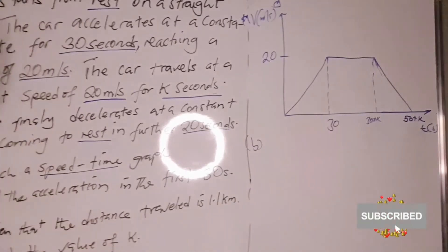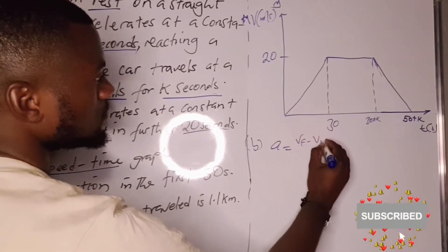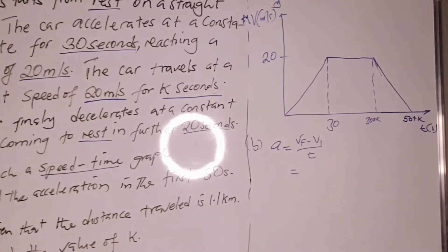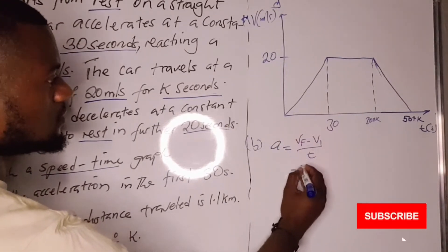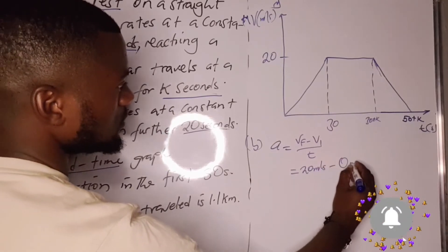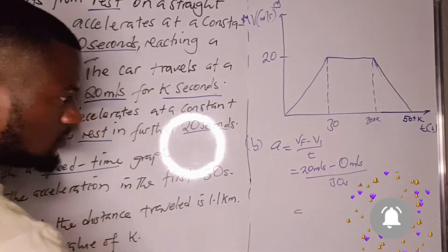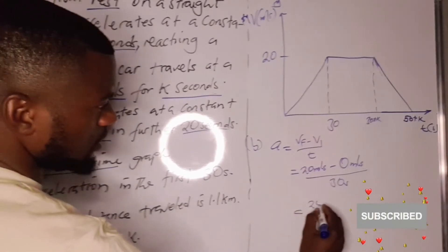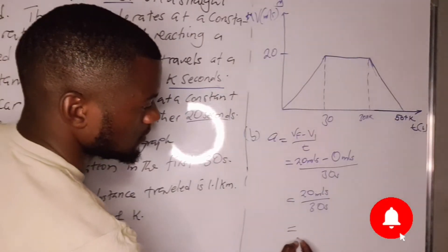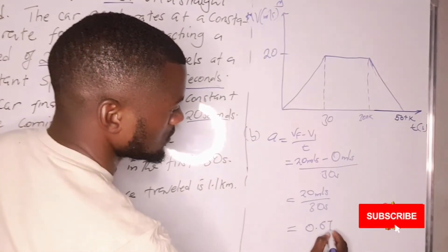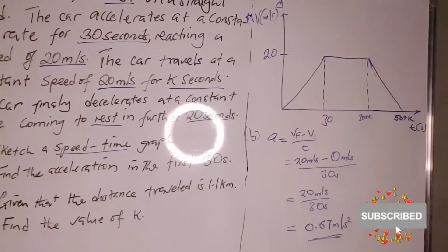For part B, we calculate the acceleration in the first 30 seconds. The final velocity is 20 meters per second, the initial velocity is 0 meters per second, and the time taken is 30 seconds. So acceleration = 20 divided by 30, which gives us 0.67 meters per second squared.